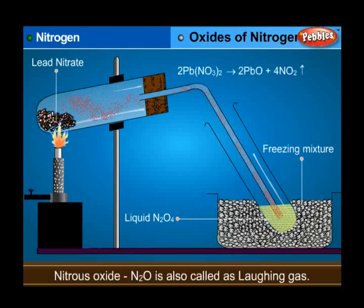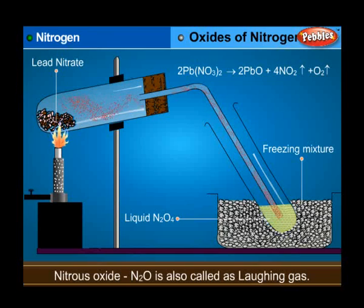Chemical equation: 2Pb(NO3)2 → 2PbO + 4NO2 + O2.